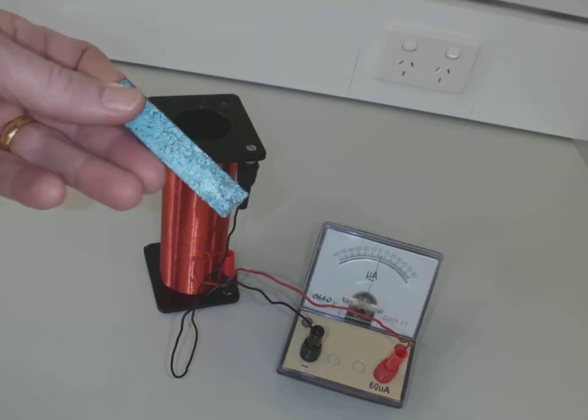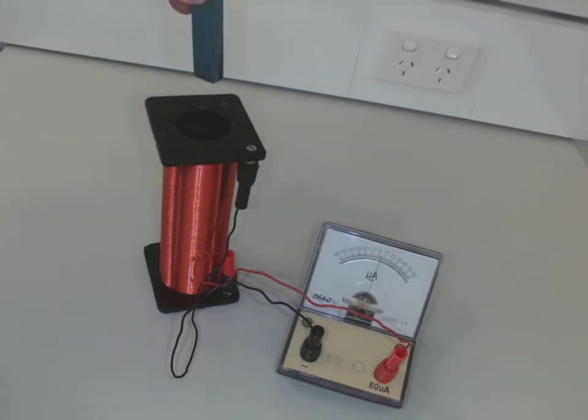We've got a little magnet, and if we place the magnet into the coil, we start to see the needle jumping around.